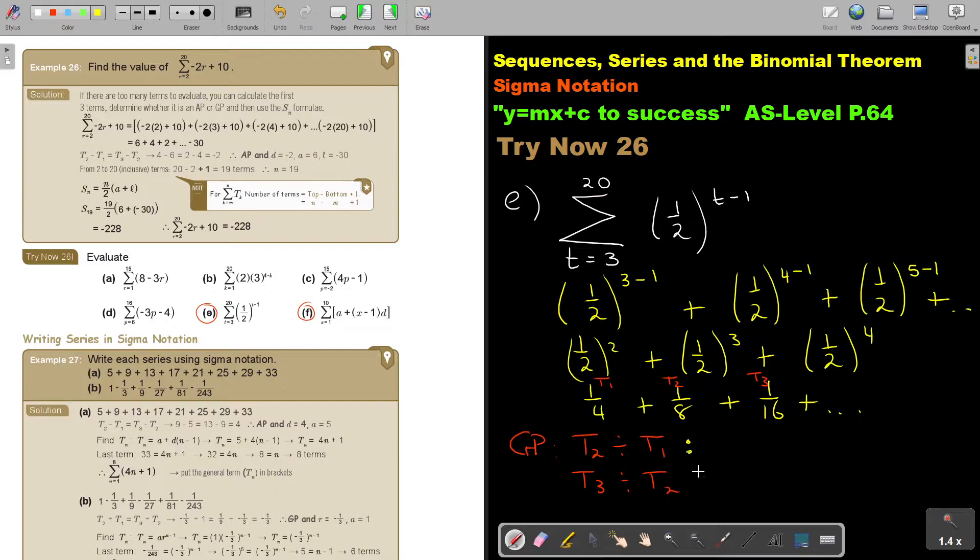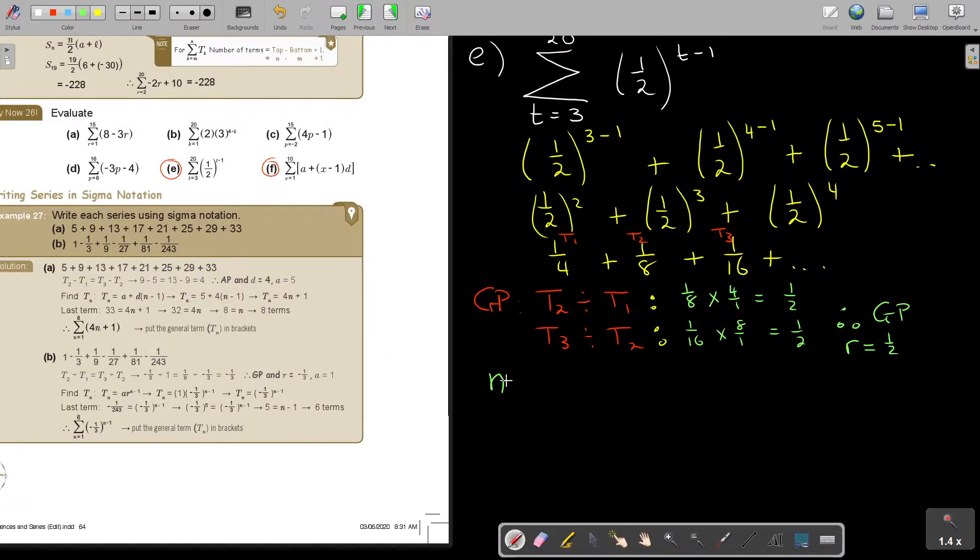So, in this case, it's 1 over 8, divide the quarter, so it's going to be multiply 4 over 1. So, that's going to be a half. And this is going to be 1 over 16, divide 1 over 8, so multiply 8 over 1, and that's also a half. So, therefore, it is a GP, and the value of R is a half. Let's move on. So, how many terms? To get N, it's going to be, now remember what I said, it's 20 minus 3, but add 1. So, it's 17, so it's 18 terms. And if you need to count on your fingers, count on your fingers to see that it makes true things.